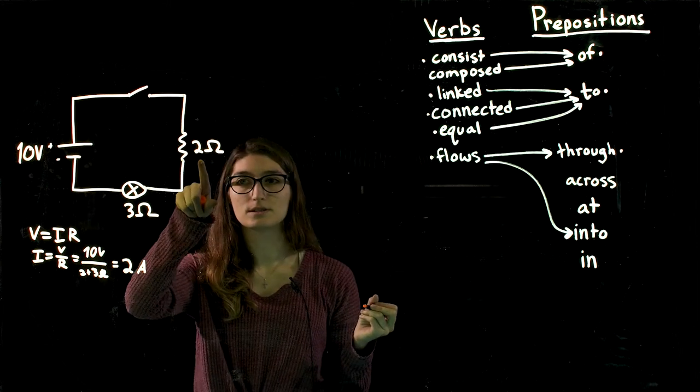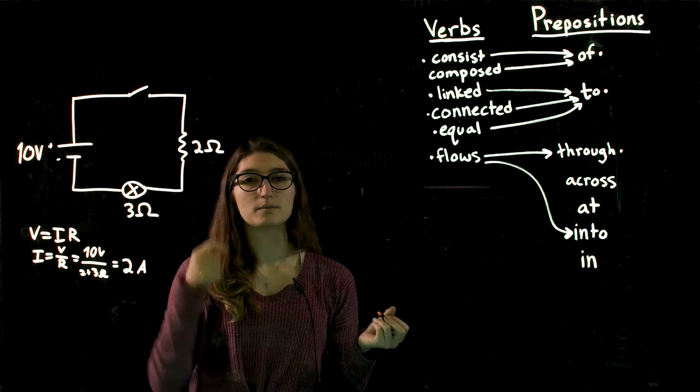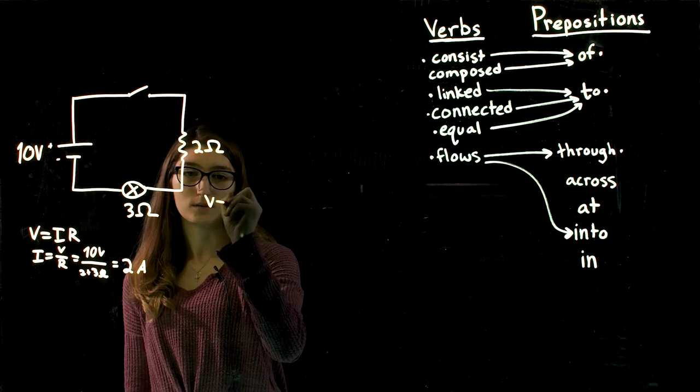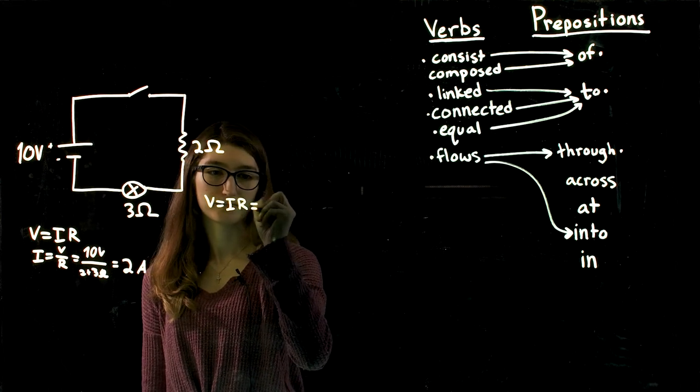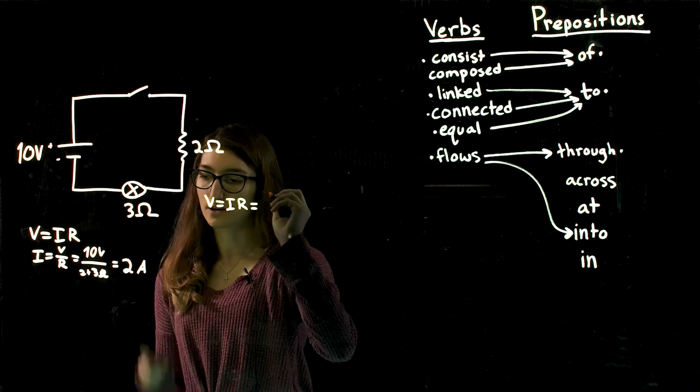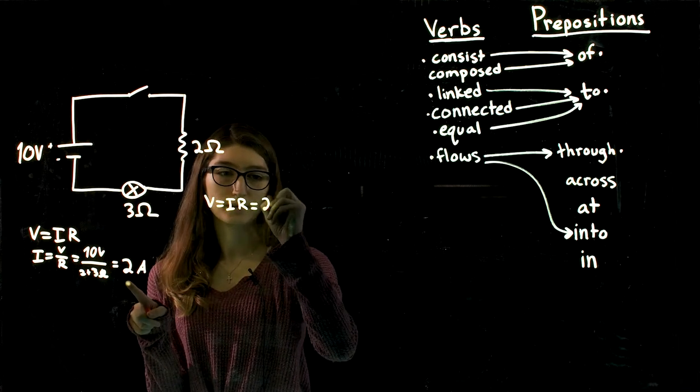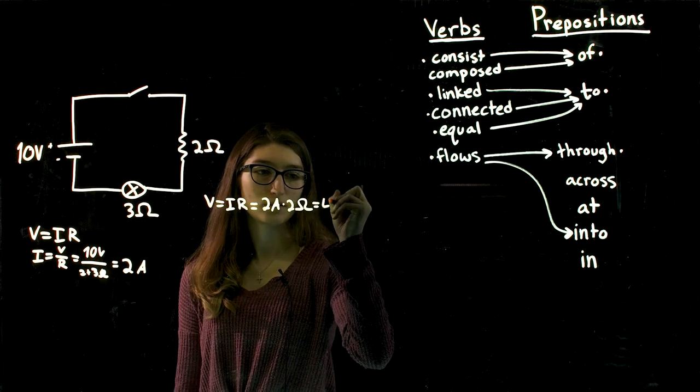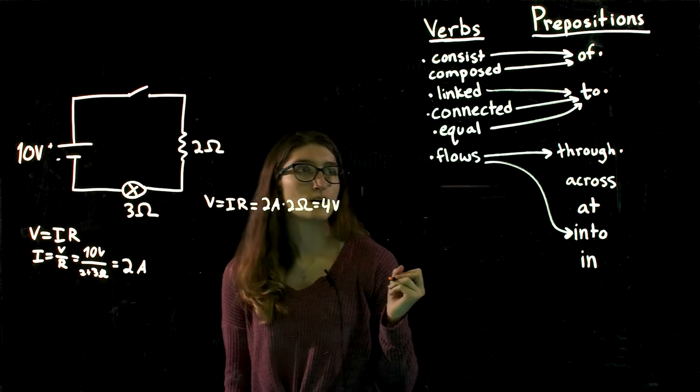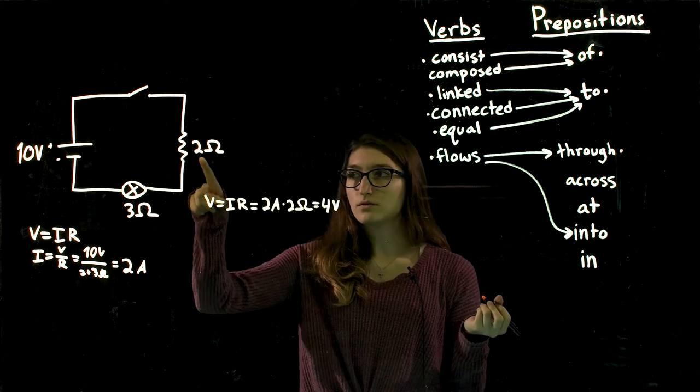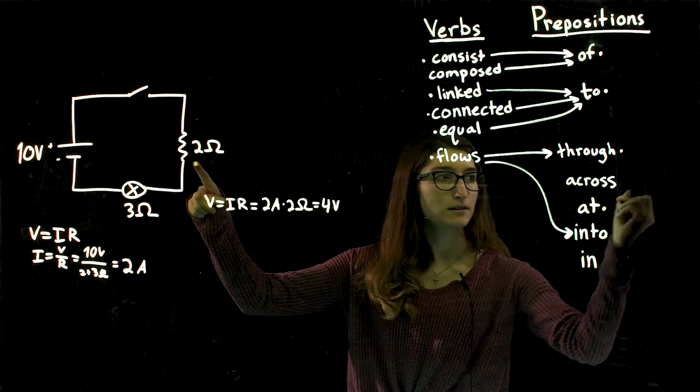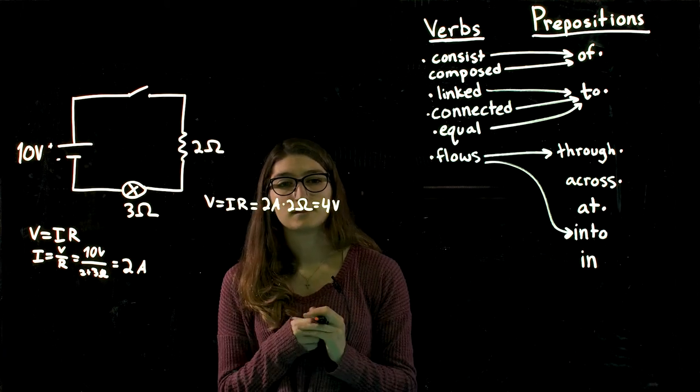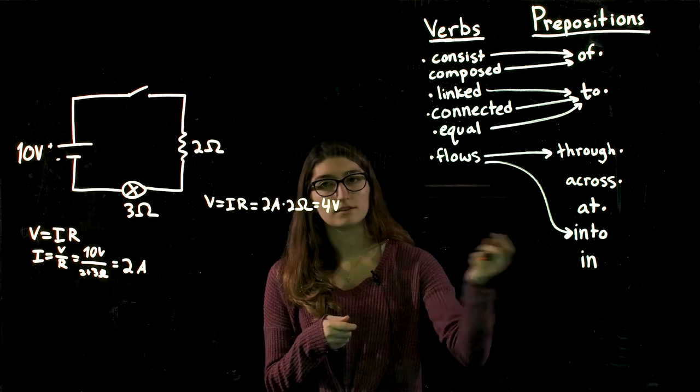This resistor, if we wanted to determine the voltage across this resistor, we would do V equals IR, with our current in our circuit being 2 amps times the 2 ohms, would be 4 volts. So the value of the voltage at the resistor is 4 volts. This is the voltage across the resistor.